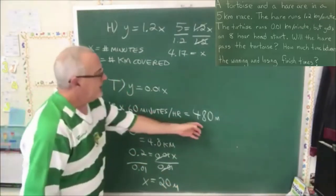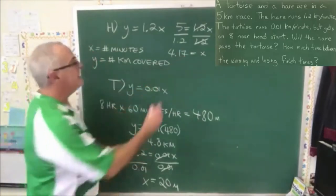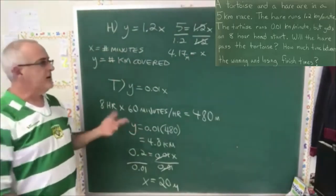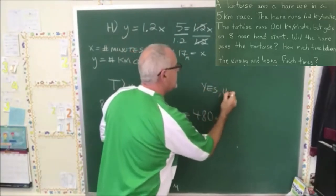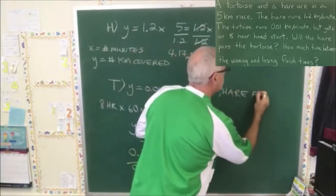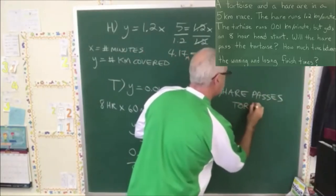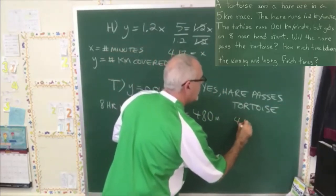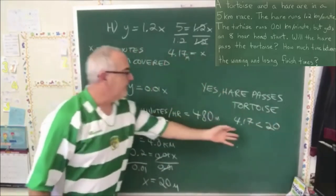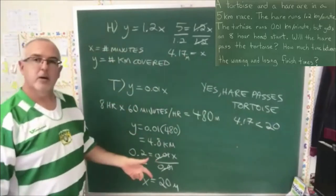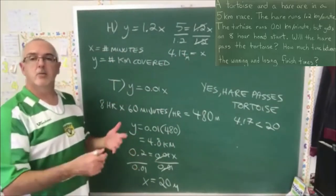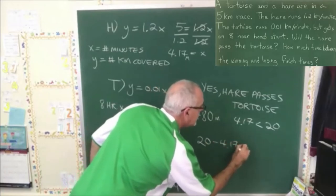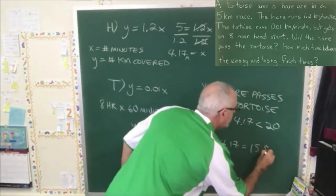After the hare started, it took the hare 4.17 minutes. That means the hare passed the tortoise — yes, hare passes tortoise. 4.17 minutes is less than 20 minutes, so I can justify that with my numbers. But the second part of the question was: how many minutes faster was the winner than the loser? To get that, we take the 20 minutes and subtract the 4.17 minutes, and we get 15.83 minutes.